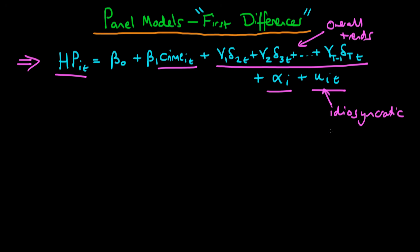This idiosyncratic error varies across city and across time, and we're assuming it is uncorrelated with the crime rate. Even though I haven't written it here, I'm thinking about the circumstance where we would be including all the various other factors which vary across city and across time — such as the unemployment rate — though in this video I'll keep things simple and assume those have been accounted for.